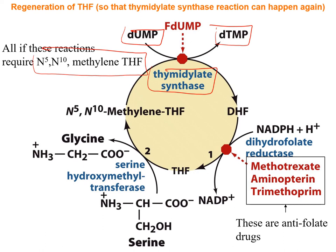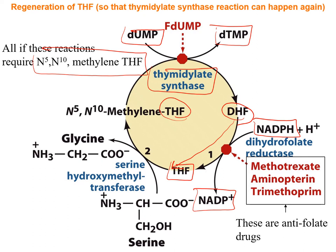Thymidylate synthase generates deoxy-TMP from deoxy-UMP. N5,N10-methylene tetrahydrofolate donates the methyl group, and tetrahydrofolate becomes dihydrofolate. Dihydrofolate reductase regenerates methylene tetrahydrofolate using NADPH — oxidizing NADPH to NAD⁺ — generating the tetrahydrofolate needed for subsequent rounds of thymidylate synthase activity. Dihydrofolate reductase is therefore critically important.